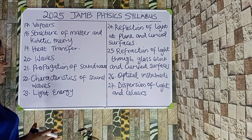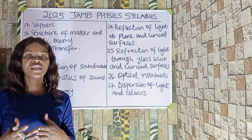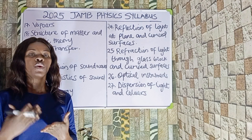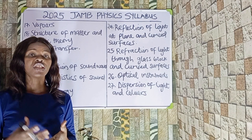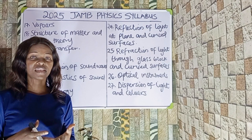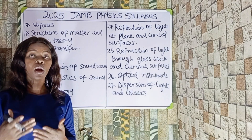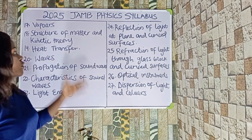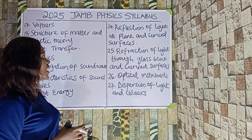Number twenty-two is light energy. Under light energy we should be looking at luminous sources of light, how light flows with linear propagation, and also shadows and eclipses — the eclipse of the sun, the eclipse of the moon, and annular eclipses. These are all under light energy.